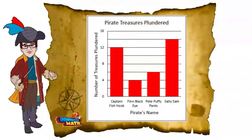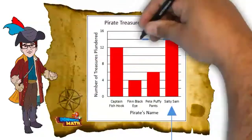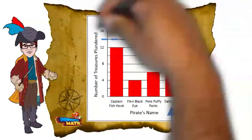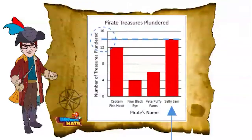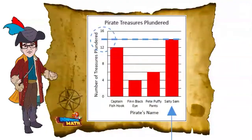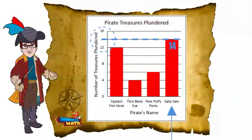Look at the bar for Salty Sam. It goes to the line that is halfway between the 12 and the 16. What number is halfway between 12 and 16? It's 14. So Salty Sam plundered 14 treasures.